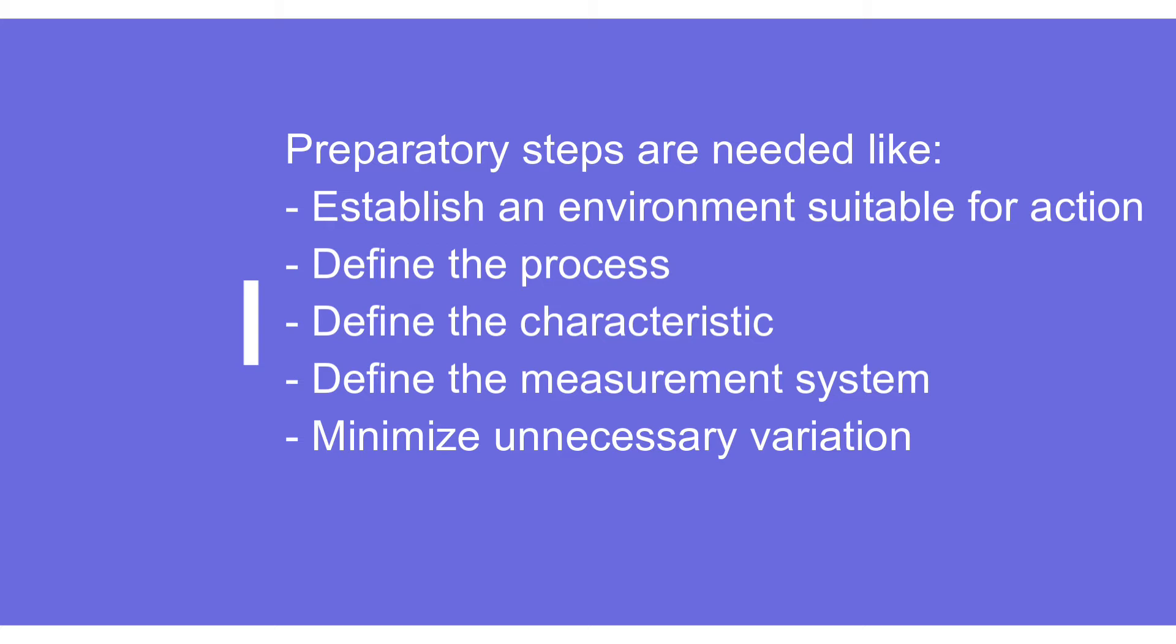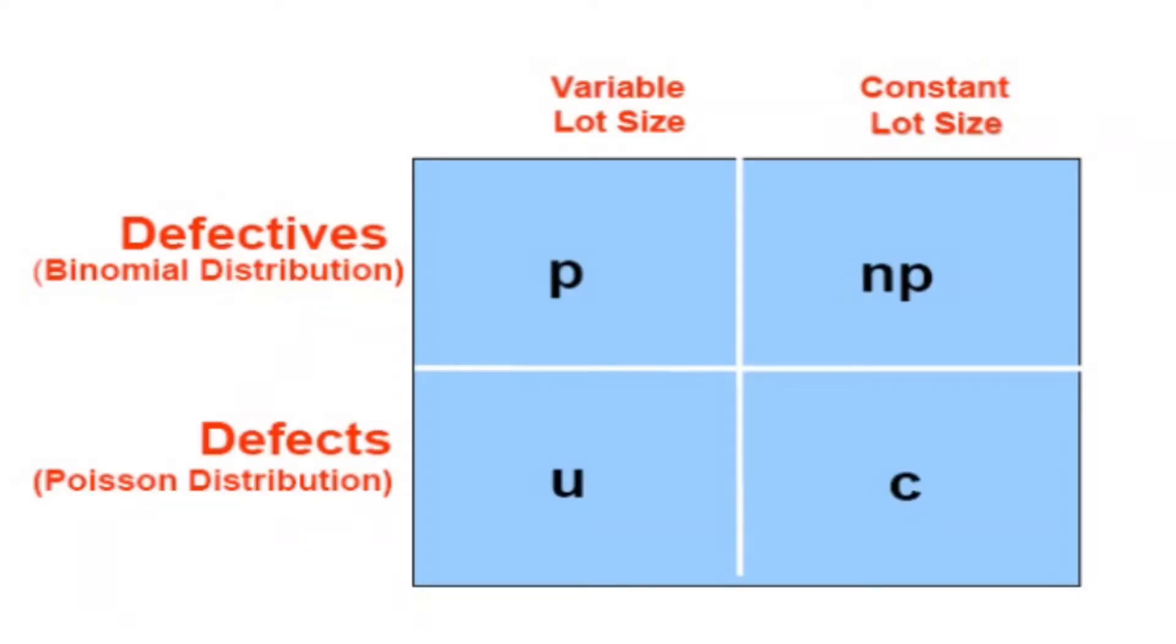When we talk about the key difference between P, NP, C, and U, we can categorize them in pairs: P and NP, and C and U.